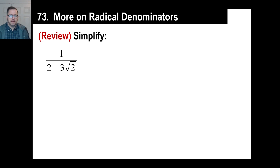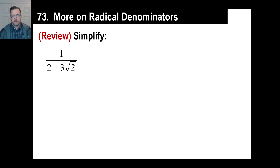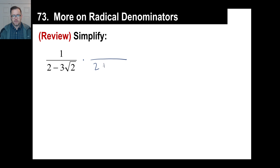Let's look at one more variation on these radicals in the denominators. If you remember, we're going to simplify something like this. Recall that we used something in the denominator called the conjugate, which is exactly the same thing as what's already there, except the sign in the middle is changed. So we do the same to the top and the bottom, as we've done since probably fifth grade when you mess with fractions.